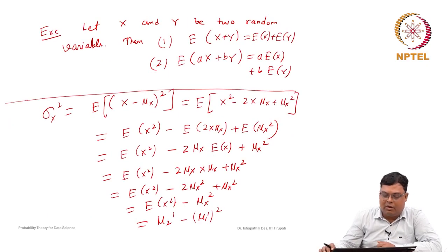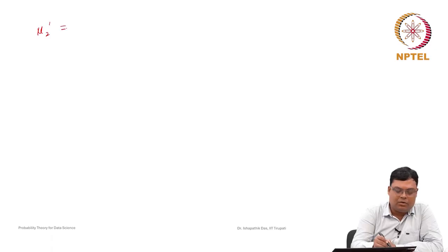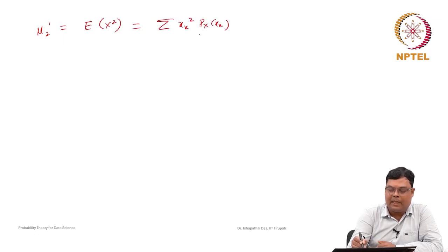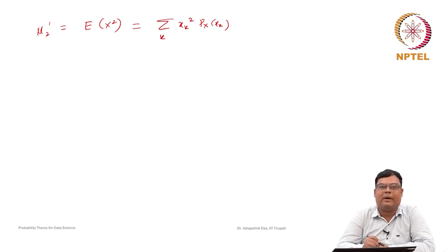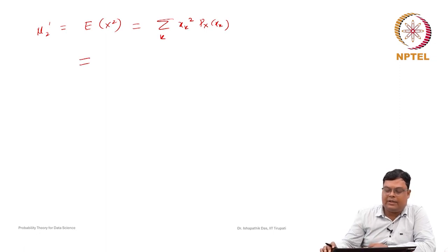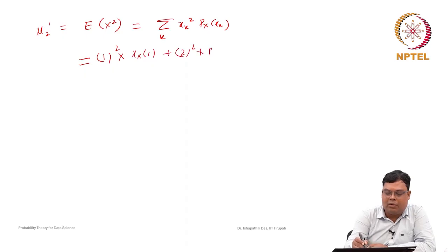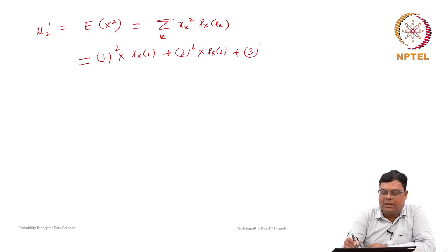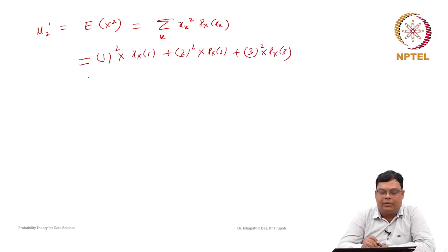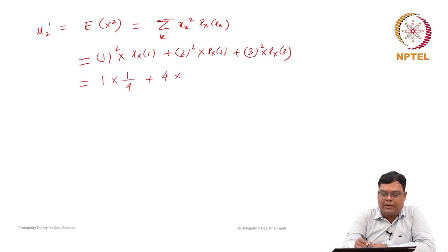We use the formula: Var(X) = μ₂' − (μ₁')². The second-order raw moment is μ₂' = E[X²] = Σ xₖ² P(xₖ) = 1²·(1/4) + 2²·(1/4) + 3²·(1/2) = 1·(1/4) + 4·(1/4) + 9·(1/2).